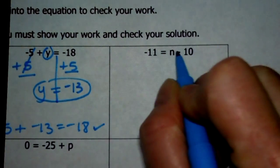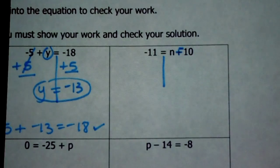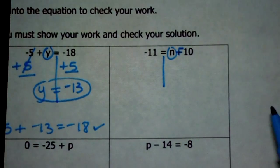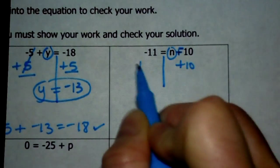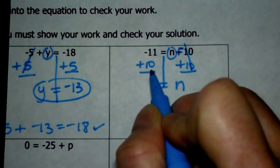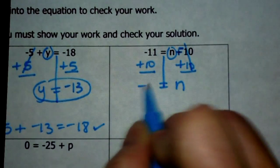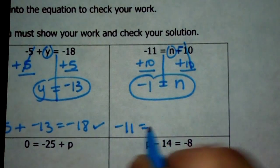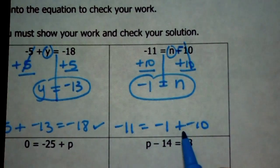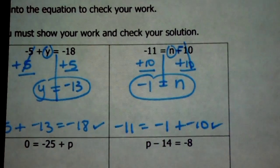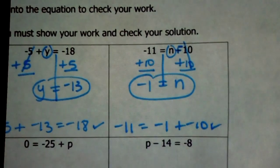Next one is subtraction, so step one: keep-change-change, draw your line. n is on the right side — that's okay, I still want n by itself. Negative 10 is what's being added to n, so I need to add 10 to each side to cancel it out so n can be alone. Negative 11 plus 10 is negative 1. It's okay to leave n on the right. To check: if n is negative 1, then negative 1 plus negative 10 should be negative 11 — and it is.